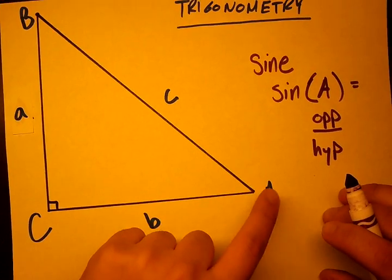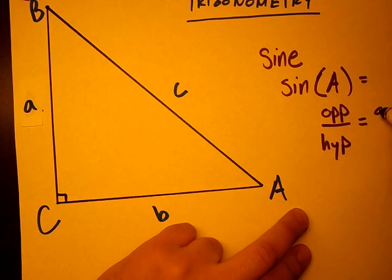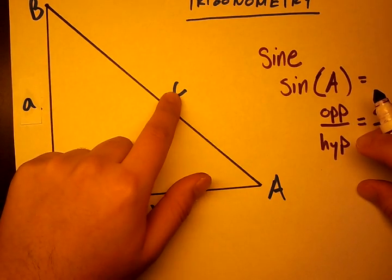So what's the side opposite A? It's the side a. And hypotenuse is c no matter what. So sine A equals lowercase a over lowercase c.